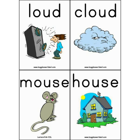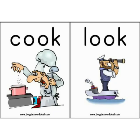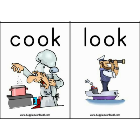Look at these rhyming words: loud, cloud, mouse, house. Look at how the words are ending — 'loud' ends O-U-D, 'cloud' also O-U-D; 'mouse' ends O-U-S-E, 'house' also O-U-S-E. Now look at these two words again: C-O-O-K, 'cook'; L-O-O-K, 'look.' The word ends with O-O-K.